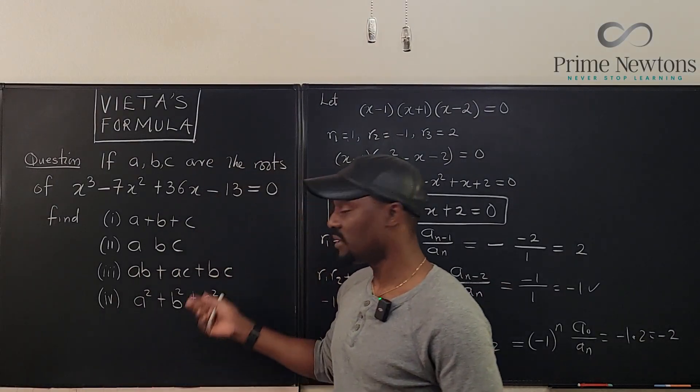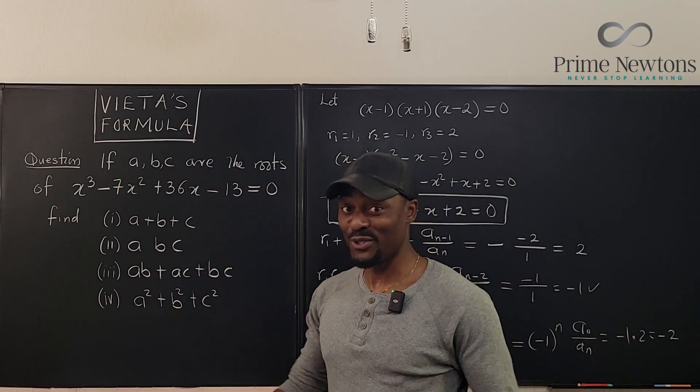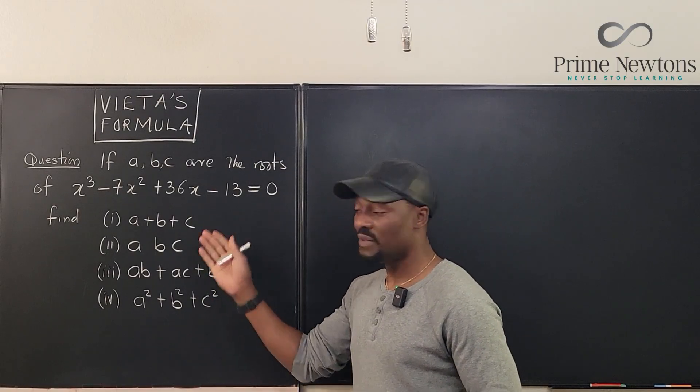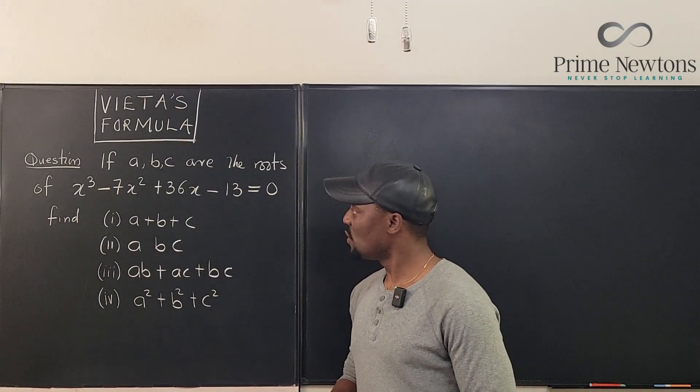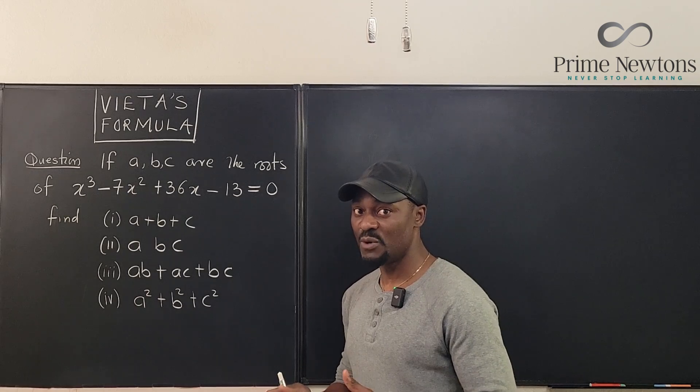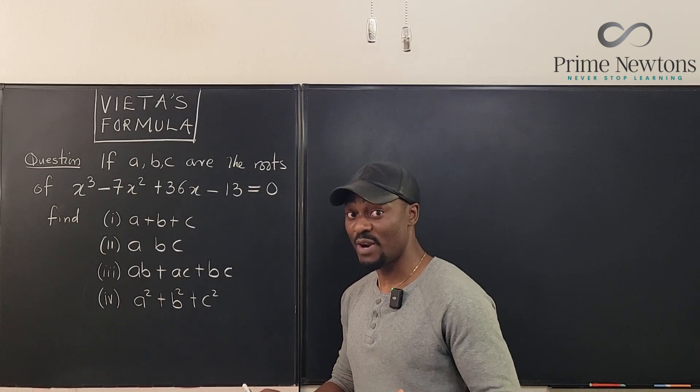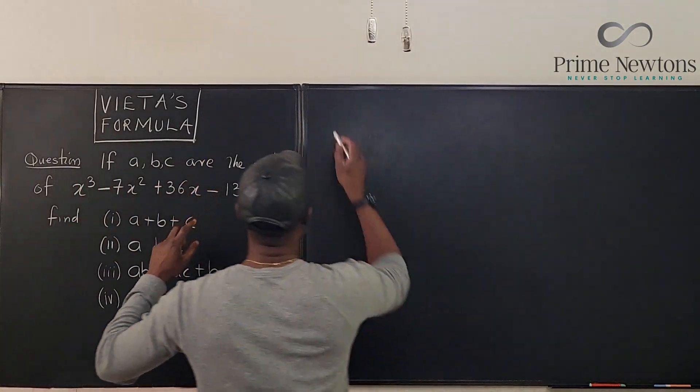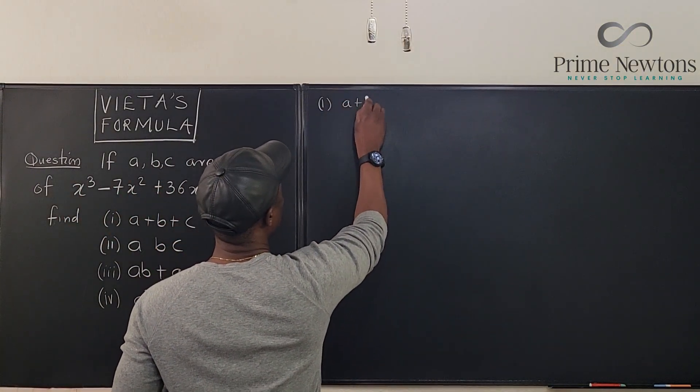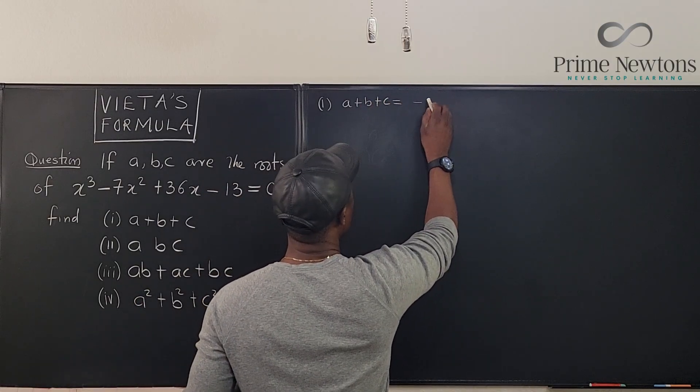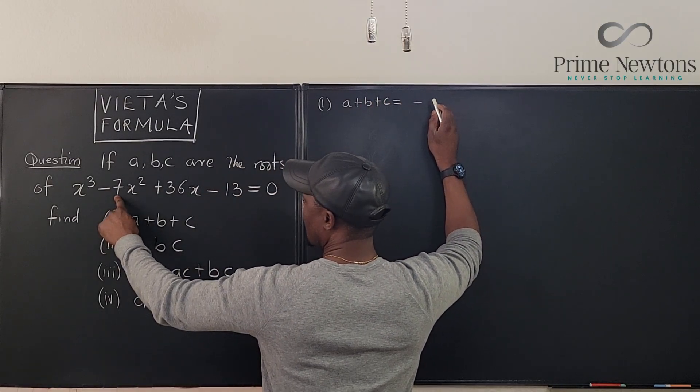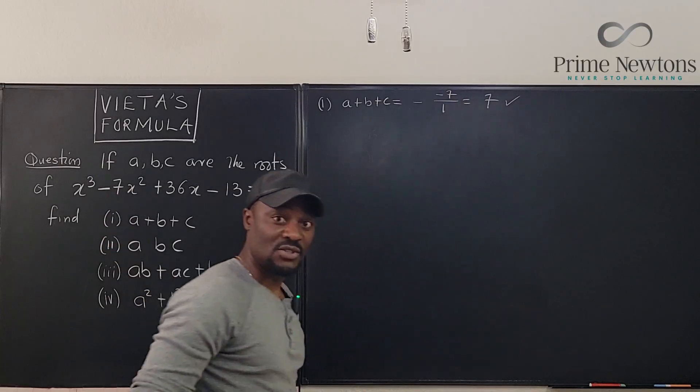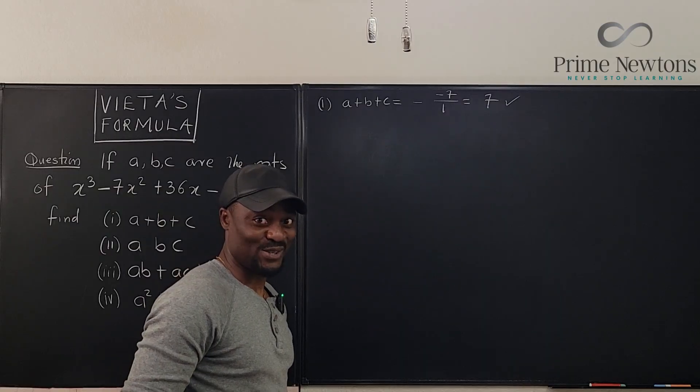We're going to use it now to answer this very easy problem. Just once you start, it becomes interesting. So here we have ABC are the roots of this cubic polynomial. And we're supposed to find the sum of the roots A plus B plus C. We already know what to do. It's going to be the ratio of this to this with a minus sign. So for the first question, we say that A plus B plus C is going to be minus this one minus negative 7 over 1, which is 7. We're done. See how quickly you can do that? You don't have to solve the cubic polynomial.